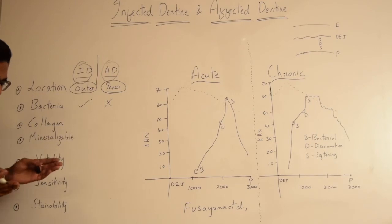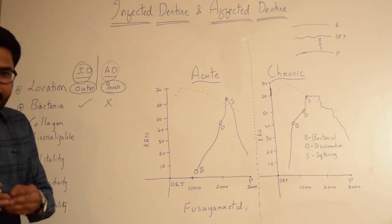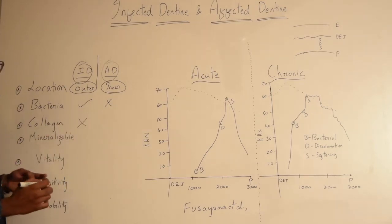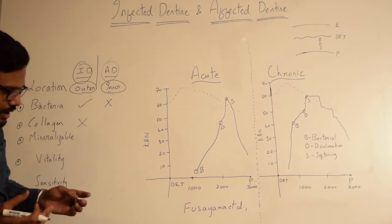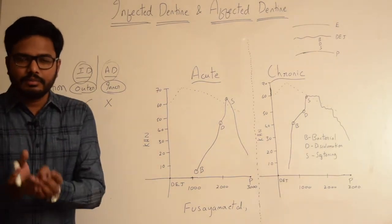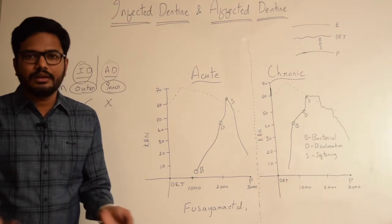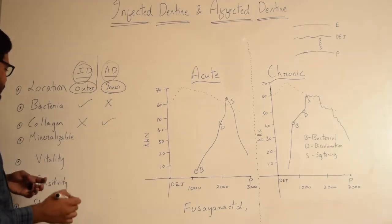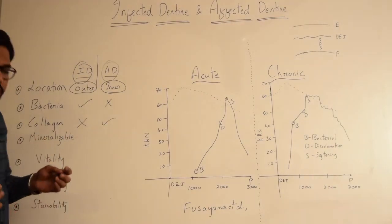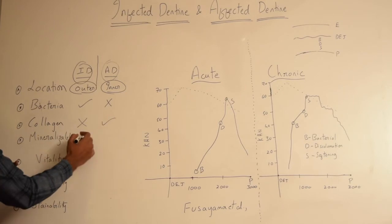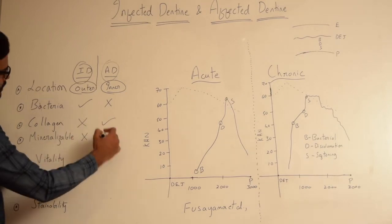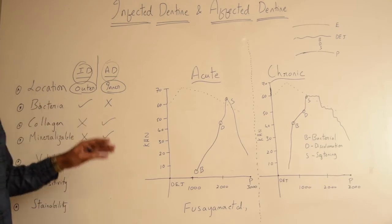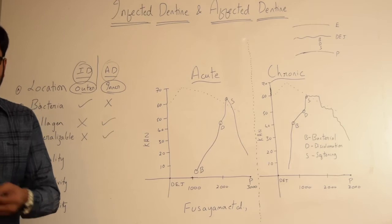Coming to the nature of collagen destruction: collagen is irreversibly denatured in case of infected dentin, whereas in affected dentin collagen is reversibly denatured and has the potential to act as a meshwork so that remineralization can take place. And coming to the ability to mineralize the tissue, infected dentin cannot be mineralized whereas affected dentin can be mineralized. That is the reason why we try to preserve affected dentin while removing carious dentin.